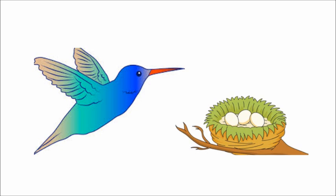Birds have a beak. The beak is red in color. It has a sharp beak. The next word is nest. The nest is found on a tree. Birds lay eggs in the nest.